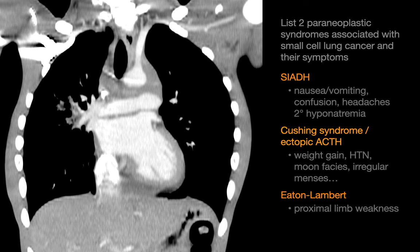Cushing syndrome, whose classic features are numerous, but include things like weight gain, systemic hypertension, moon facies, and irregular menses, for starters. And Eaton-Lambert, which can manifest as proximal limb weakness.